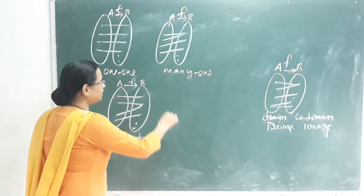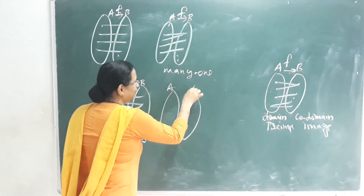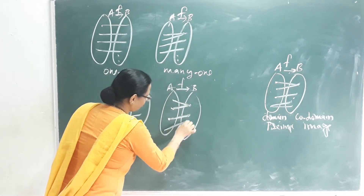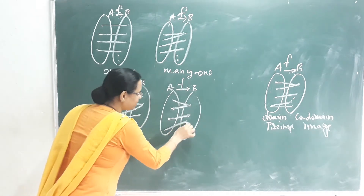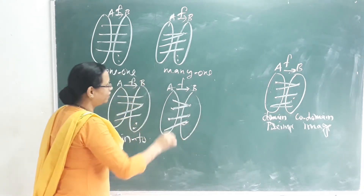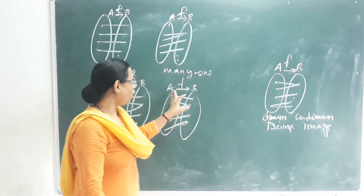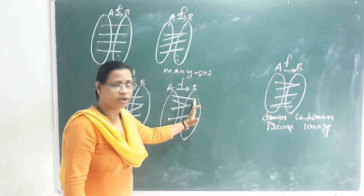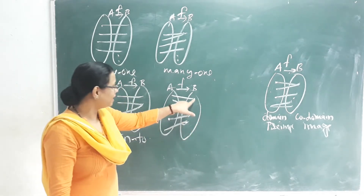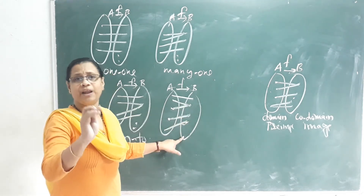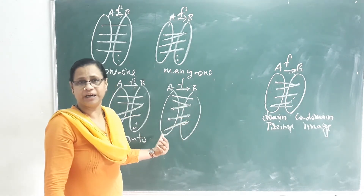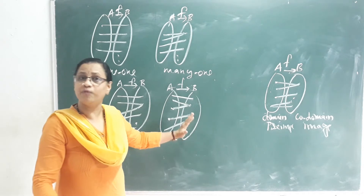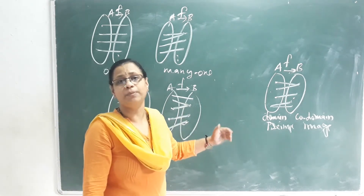What is the Onto function? In an Onto function from A to B, every element in the co-domain B has at least one corresponding pre-image in A. Every element of the co-domain is mapped. All x in A correspond to images, and no element in the co-domain is left without a pre-image. We call this an Onto function.